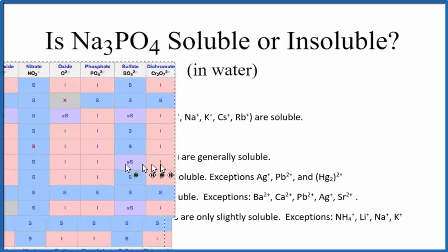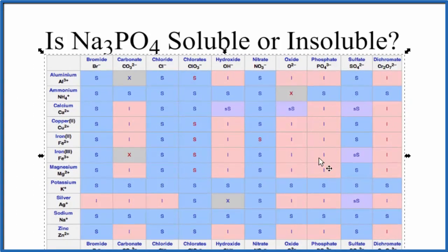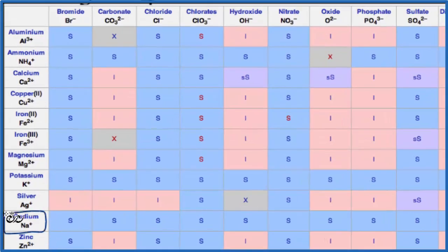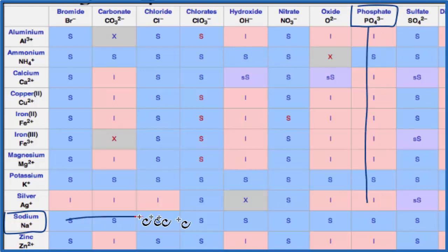We could also look at a solubility chart. So here's a solubility chart. And as we go down, we're looking for sodium. Right here is sodium. And then across the top, the anions and negative ions. Here's the phosphate ion, PO3-. We go down and then we go over.